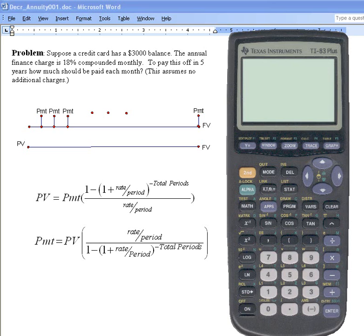Welcome to the Finite Math Podcast. Today I want to use the TI calculator to solve a problem involving a decreasing annuity.